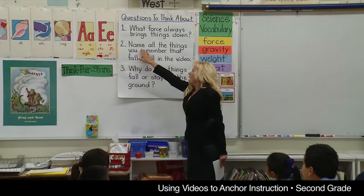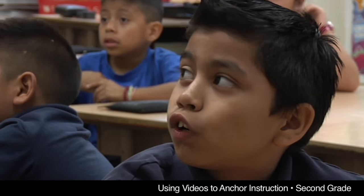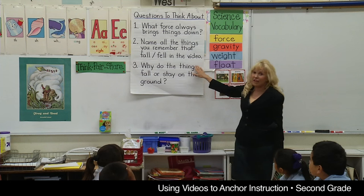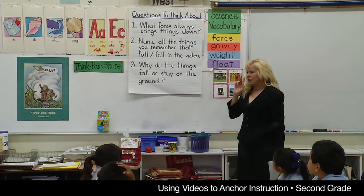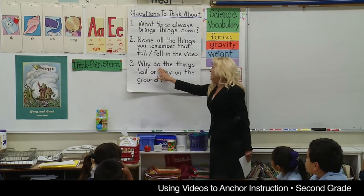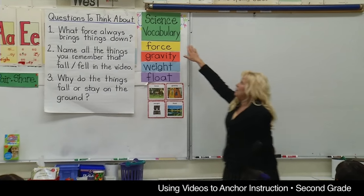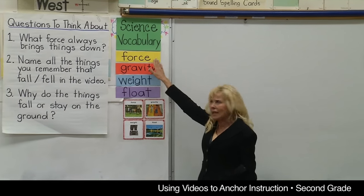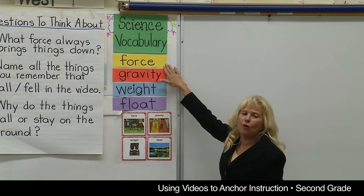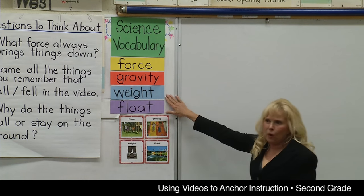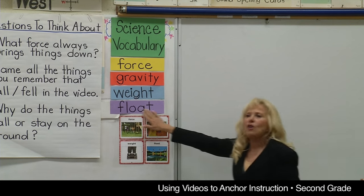Let's read number two: Name all the things you remember that fall or fell in the video. And then let's read number three: Why do the things fall or stay on the ground? All right, now before we watch the video, I want you to be thinking about our science vocabulary words. What's our first vocabulary word we've been studying? Force. What's our second one? Gravity. What's our third one? Weight. And what's our last one? Float.